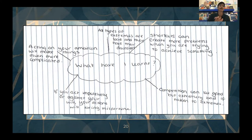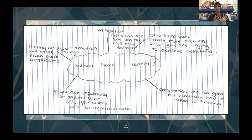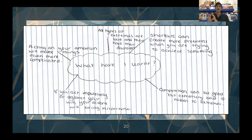Meanwhile, another student talked much more about what they learned from the text they were studying — things like: 'If you act impulsively or against your will, your actions will bring misfortune,' or 'Competition can be good, but extremely bad if taken to extremes.' Their lessons came from looking at the people inside the text. The difficulty for teachers is to step back and say: you have ownership over what you learned, what you understood and what you take away from that — that's up to you. I can't decide that for you. I can decide skills-based outcomes like reading and writing, but when talking about understandings about yourself in the world, that has to be a little bit more flexible.